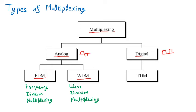Under digital multiplexing we have TDM — Time Division Multiplexing. In TDM, we do not merge all signals together. Instead, time slots are assigned: in the first second the first device can send, in the next second another device can send, and so on. It's like giving everyone in a class one minute to speak.